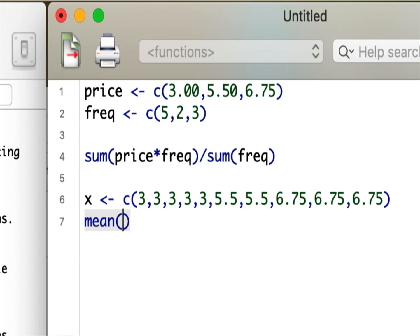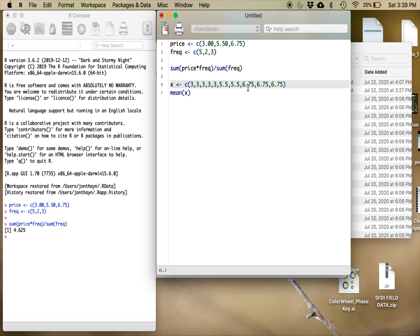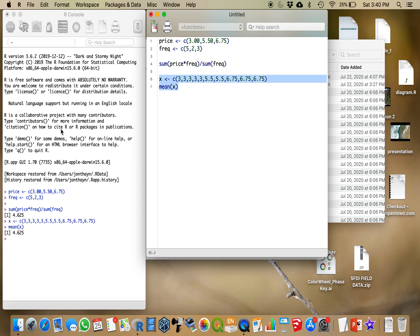Right, and if I just take the mean of that, I should get exactly the same answer, which I do, four dollars and sixty three cents. But instead of repeating everything, I just multiply the price times the frequency and then divide by the sum of the frequency.